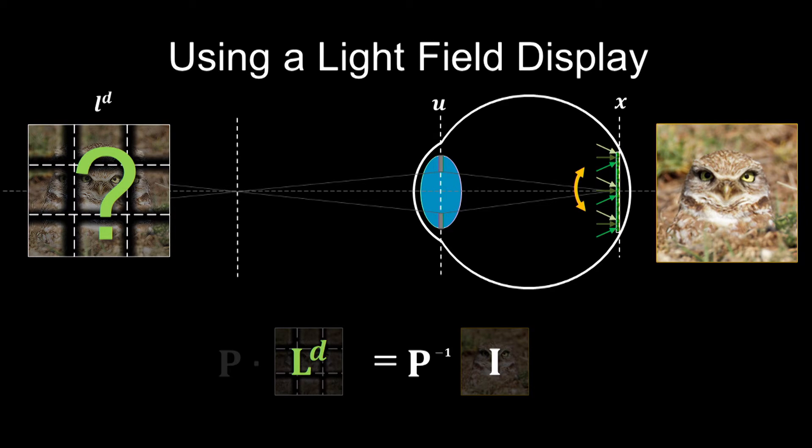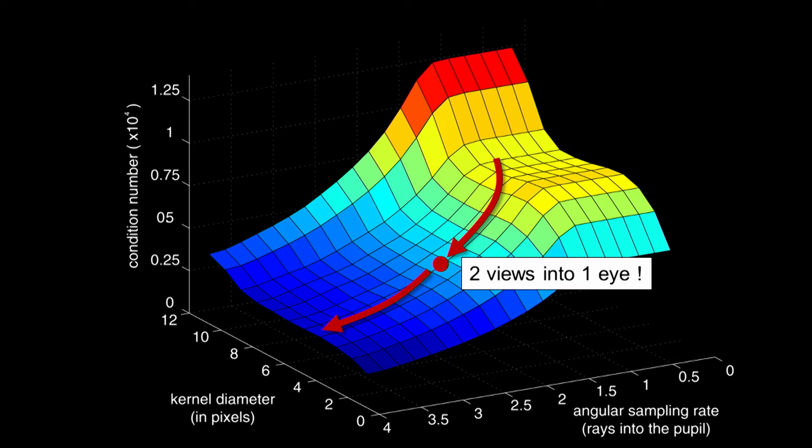We need to look into the structure of the projection matrix to figure out how we can solve it better. The key insight we found in this problem is that we need at least two views entering the pupil at the same time in one dimension, which means we need a pretty dense light field instead of sparse light field. You need at least two views in one direction, meaning you need four views simultaneously entering the pupil.